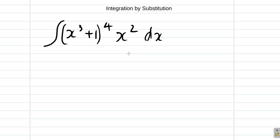We're supposed to integrate this function: x cubed plus 1 to the power of 4, multiplied by x squared.